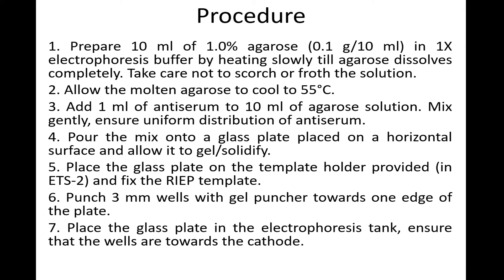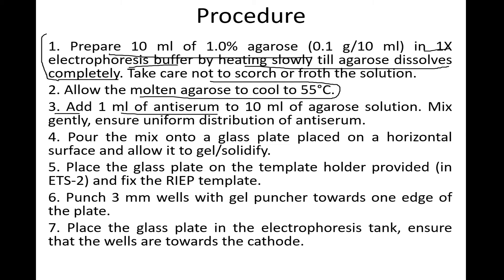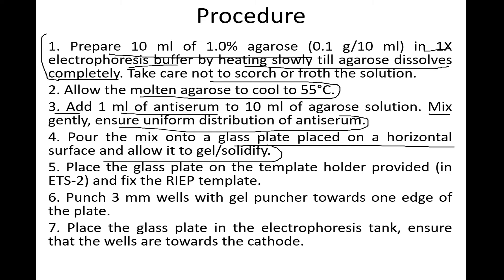The procedure begins with preparing 10 ml of agarose in 1x electrophoresis buffer by heating slowly until the agarose dissolves completely. Allow the agarose to cool to 55°C. Then add the antiserum to the 10 ml agarose solution and mix gently to ensure uniform distribution. Pour the mixture onto a glass plate placed on a horizontal surface and allow it to solidify.